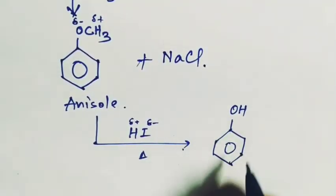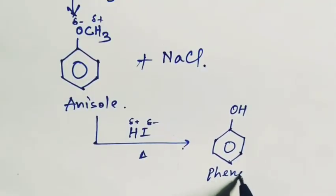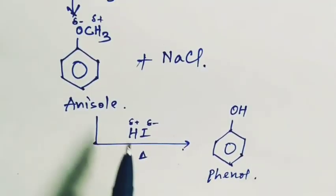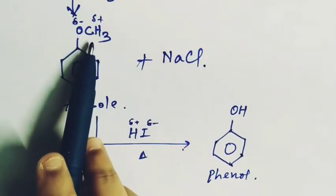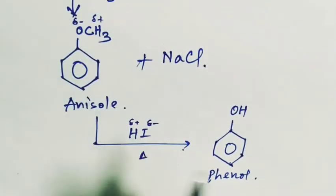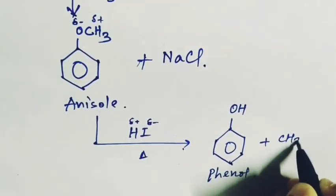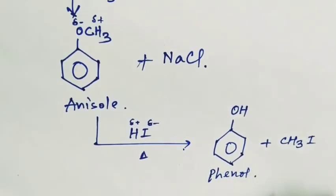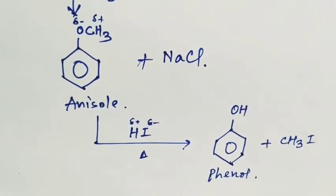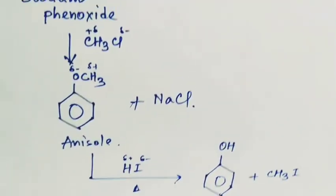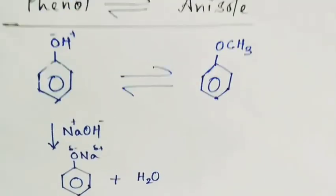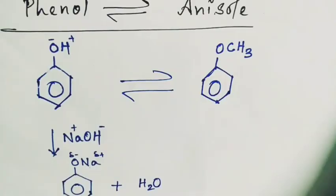And the rest of the part is CH3 here and I here, so this is CH3I, that is methyl iodide. So in this way you can form from phenol to anisol and also from anisol to phenol.